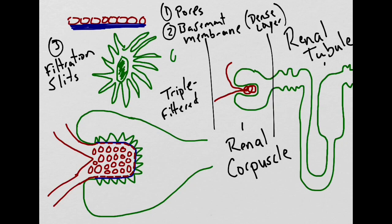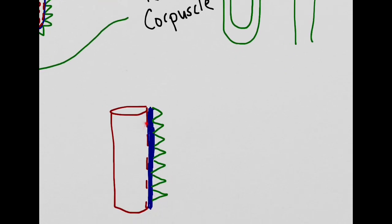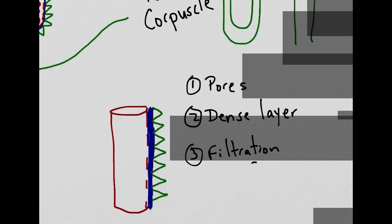You can think of these filtration slits as the gaps in between your own toes on your foot. Once again, the three layers of the filter are the fenestrated capillaries or the pores, the second layer is the dense layer, and the third layer is the filtration slits.